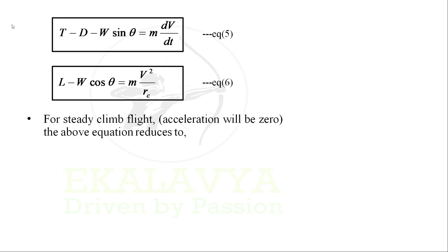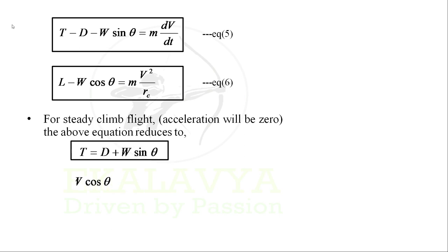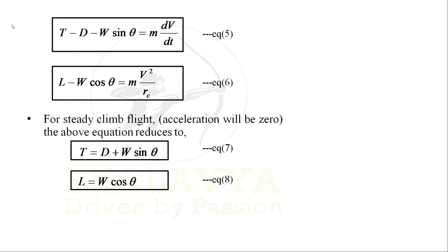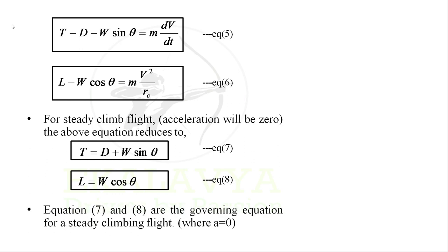For a steady climbing flight, acceleration will be zero, so Equation 3 reduces to: thrust equals drag plus W sin θ, and lift equals W cos θ. Let us denote these as Equation 7 and Equation 8. These are the governing equations for a steady climb flight where acceleration is zero.